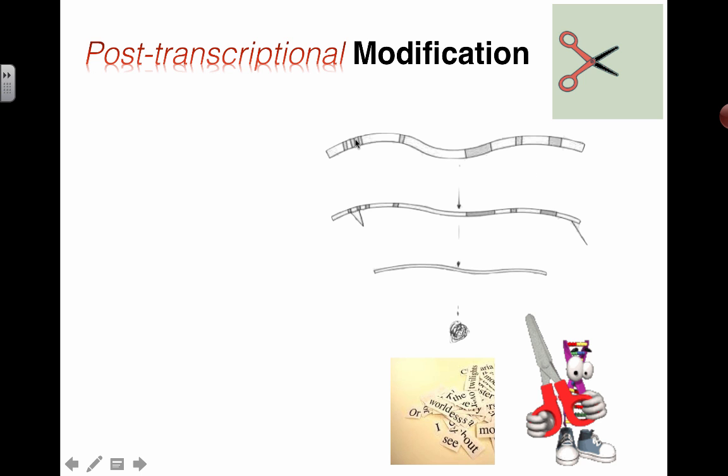Hopefully you can see that in this little diagram here. What we're doing is we're going to remove all the gray bits, glue all the white bits back together, and that's going to be our message that's going to be useful for translating into the final protein. So let's talk about what's going on here.